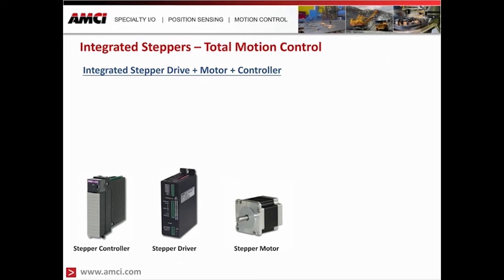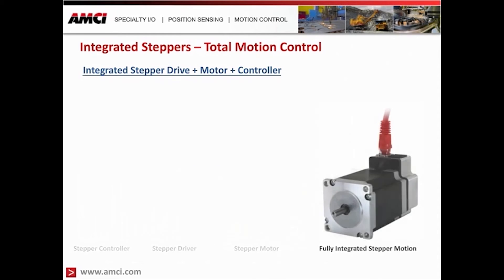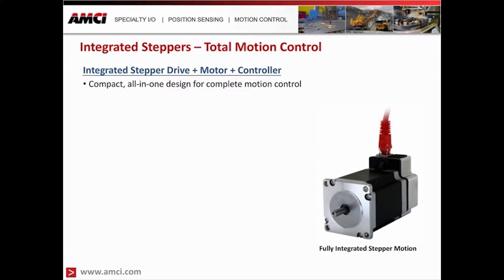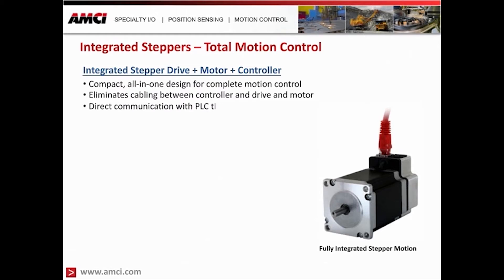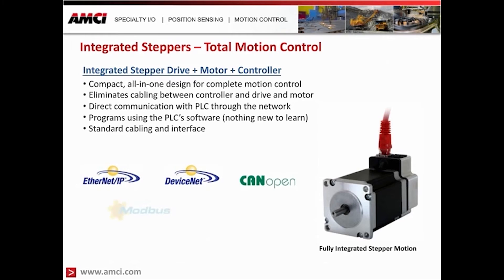The last integrated product introduction is the all-in-one motion controller, which combines the motor, drive, and control into one compact but powerful package. This three-in-one package eliminates wiring between motor, drive, and controller, saving money on initial cost and installation. Like other integrated products, the all-in-one design uses standard industrial networks to communicate directly to the PLC, allowing the user to program in a familiar software environment. All-in-one packages use industry standard motors and cables, and connectivity expands as industrial networks expand, offering options for most industrial PLCs and PACs.